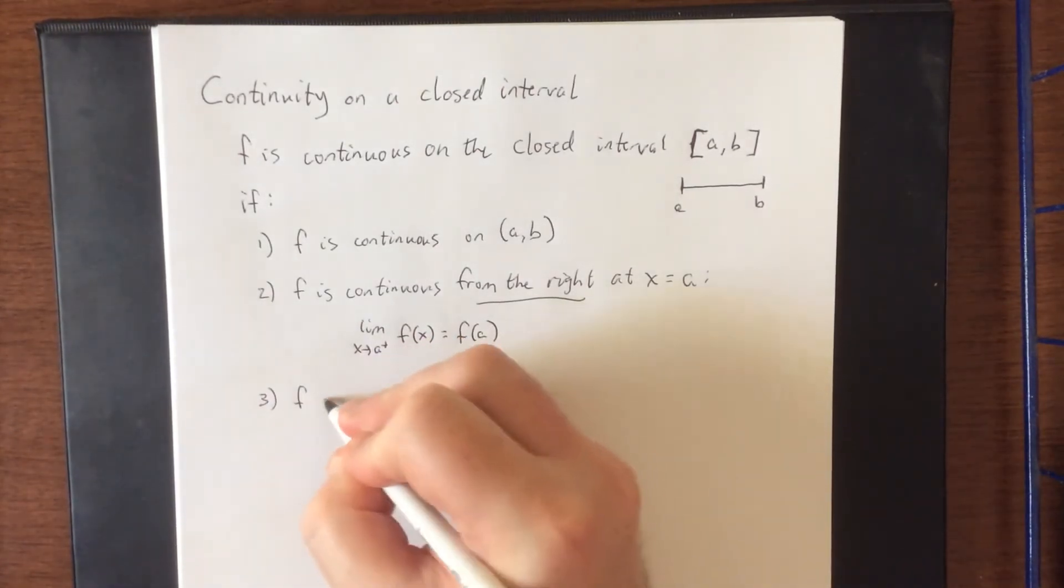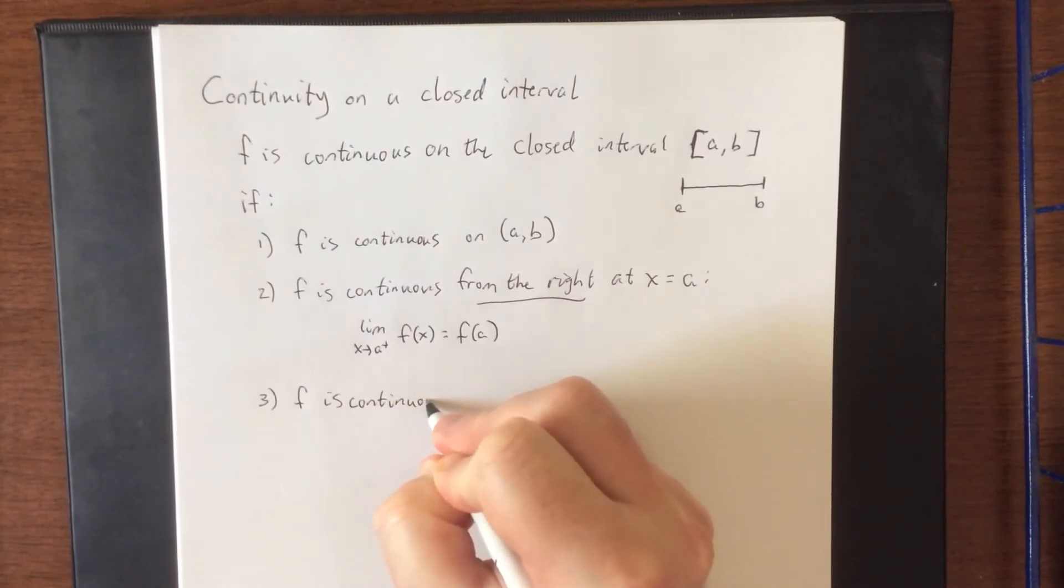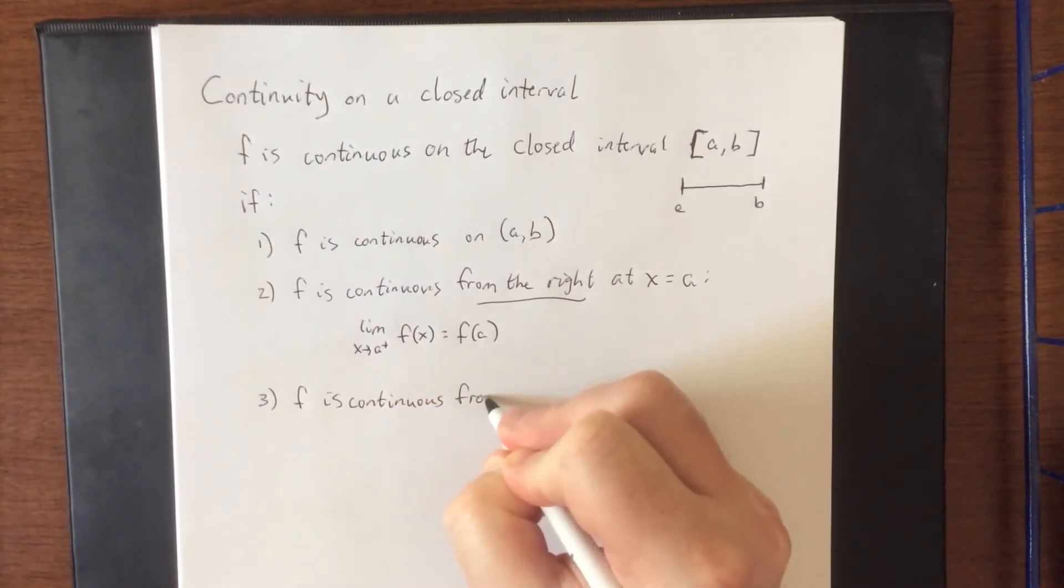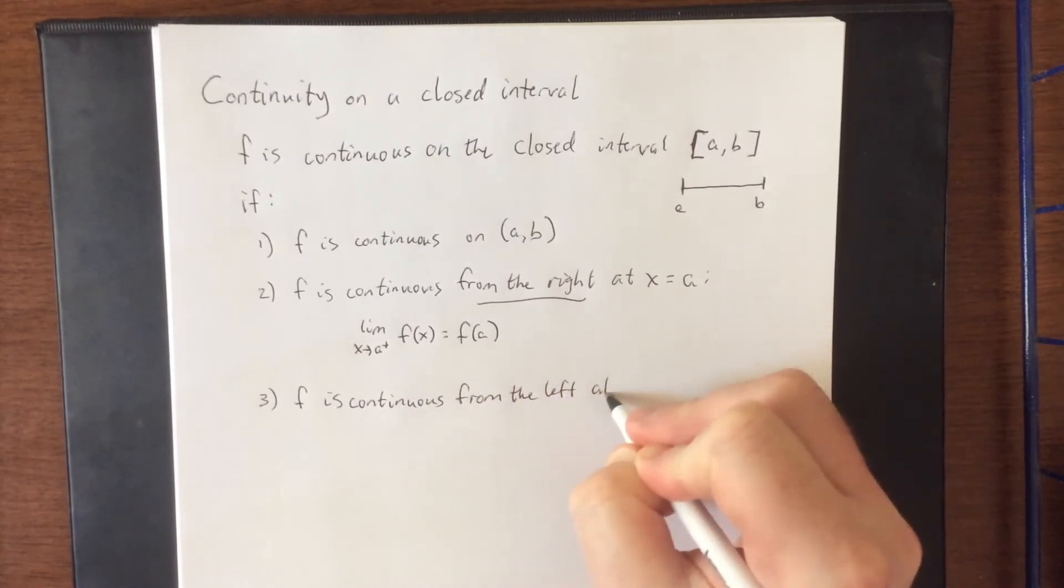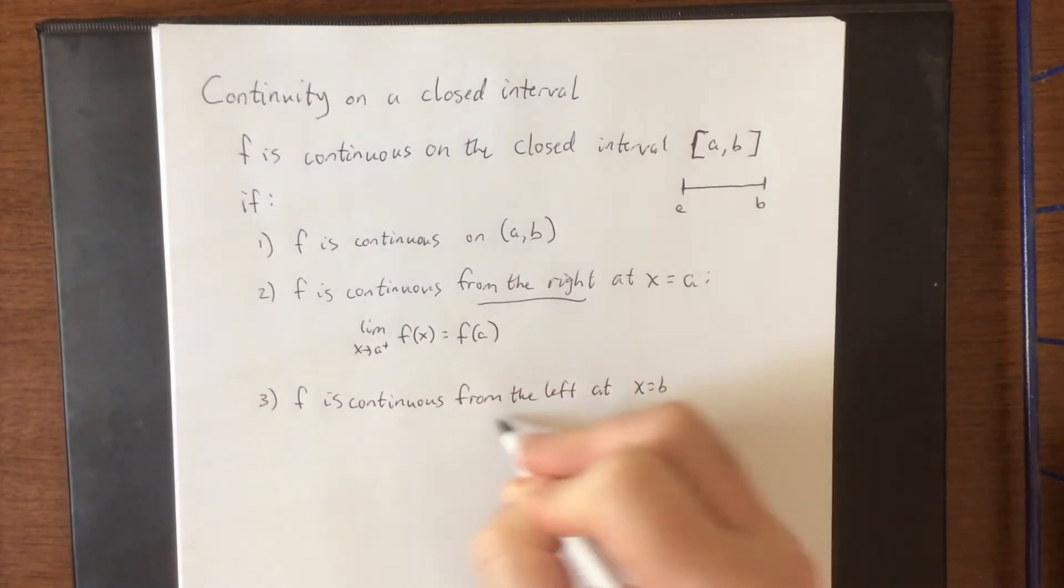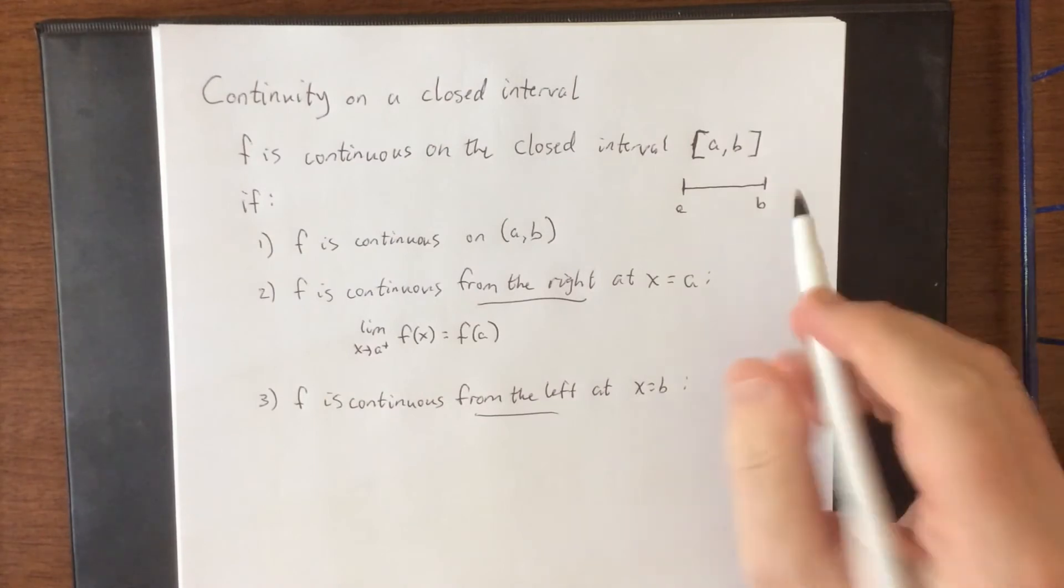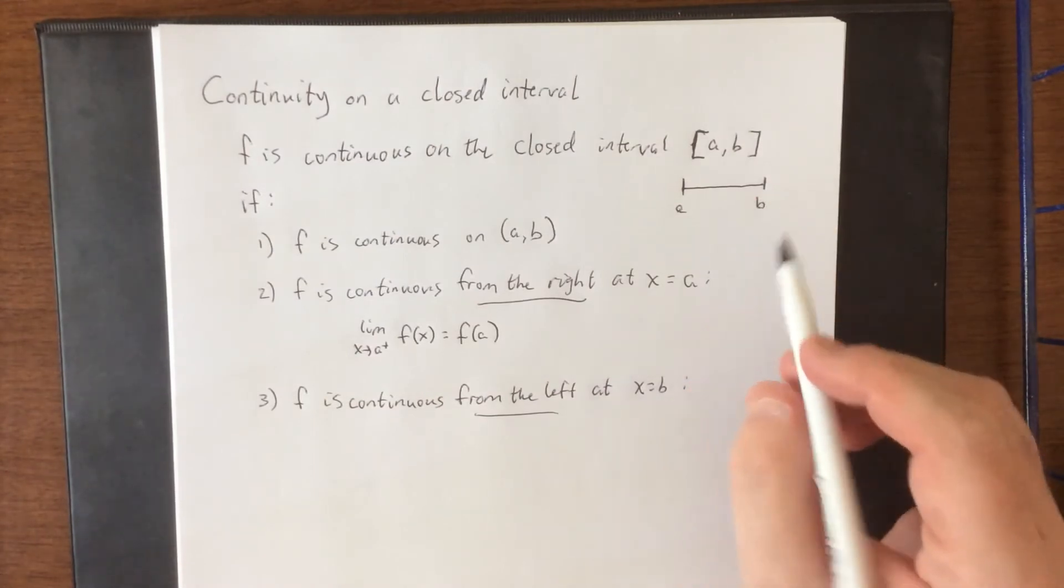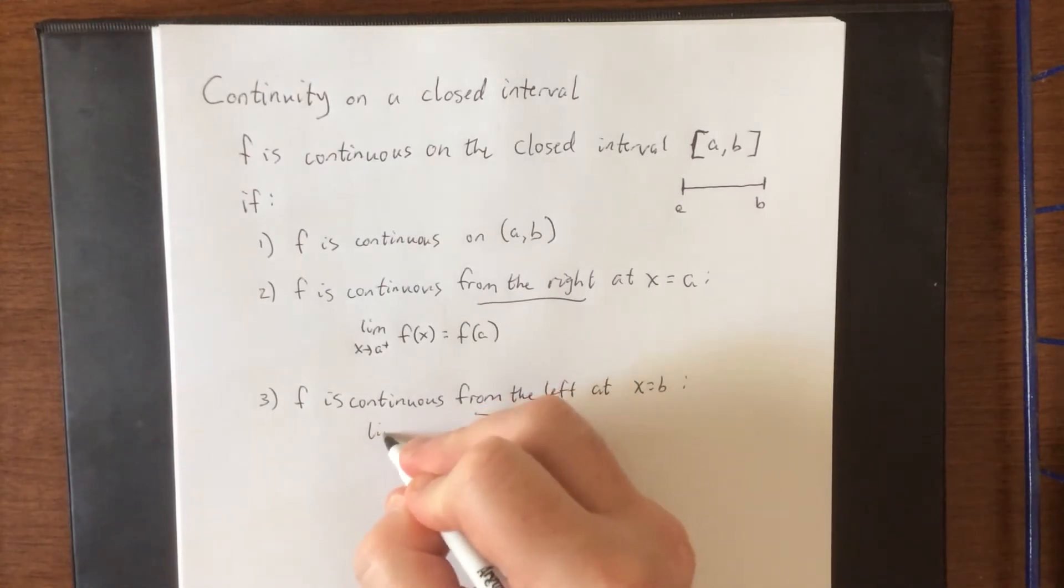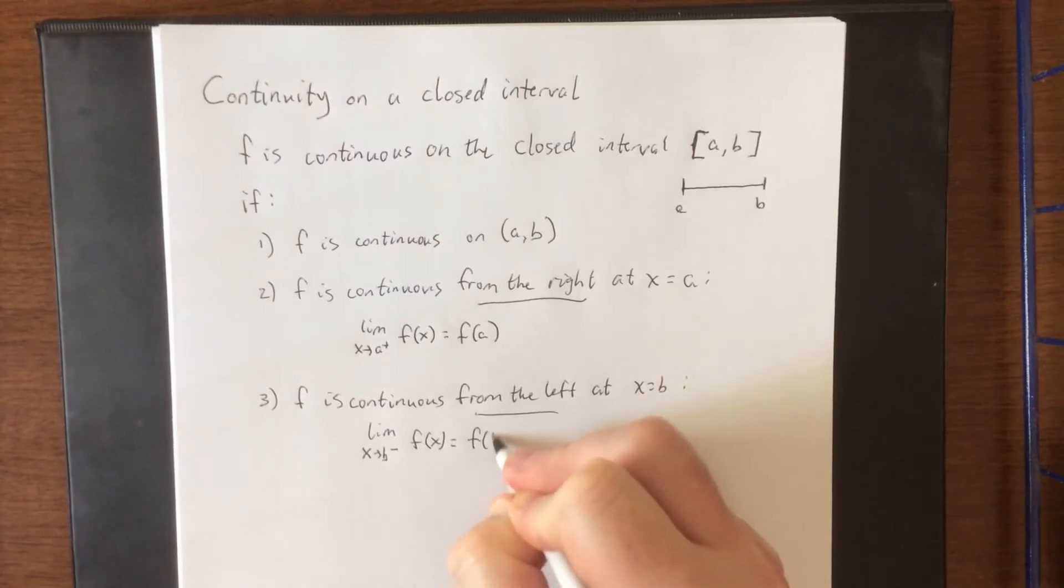Similarly, we would also say that f is continuous from the left at x equals b. So for a right endpoint, the function is only necessarily defined on the left hand side, meaning that the limit as x approaches b from the left of f(x) is equal to f(b).